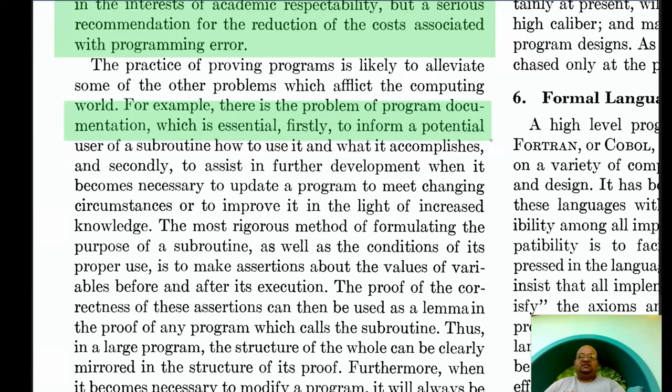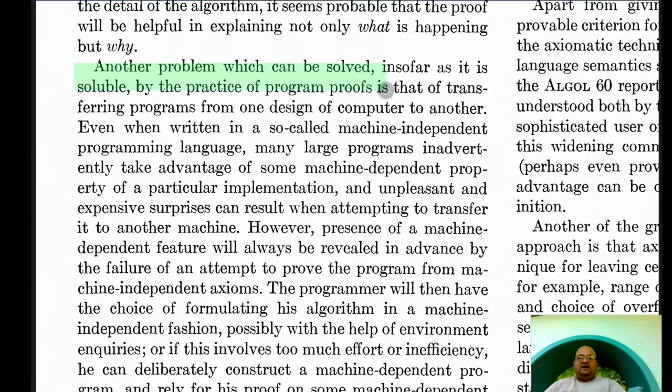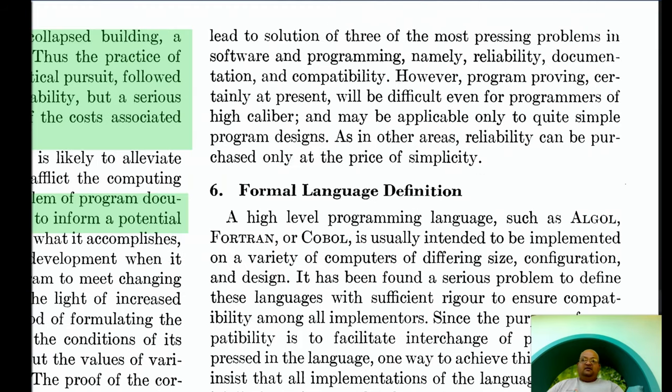Another advantage of using proofs, especially preconditions and postconditions, is program documentation. If you accurately specify what must hold true before a procedure and what then will hold true at the end of a procedure, that is a fantastic way to document what that procedure does without specifying its internal implementation details. Another place where proofs are helpful is in specifying the behavior of a program independent of the underlying machine details. Thus, the author claims that if we get into the practice of trying to prove our programs correct, we can address three of the most pressing problems in programming, which are reliability, documentation and compatibility.